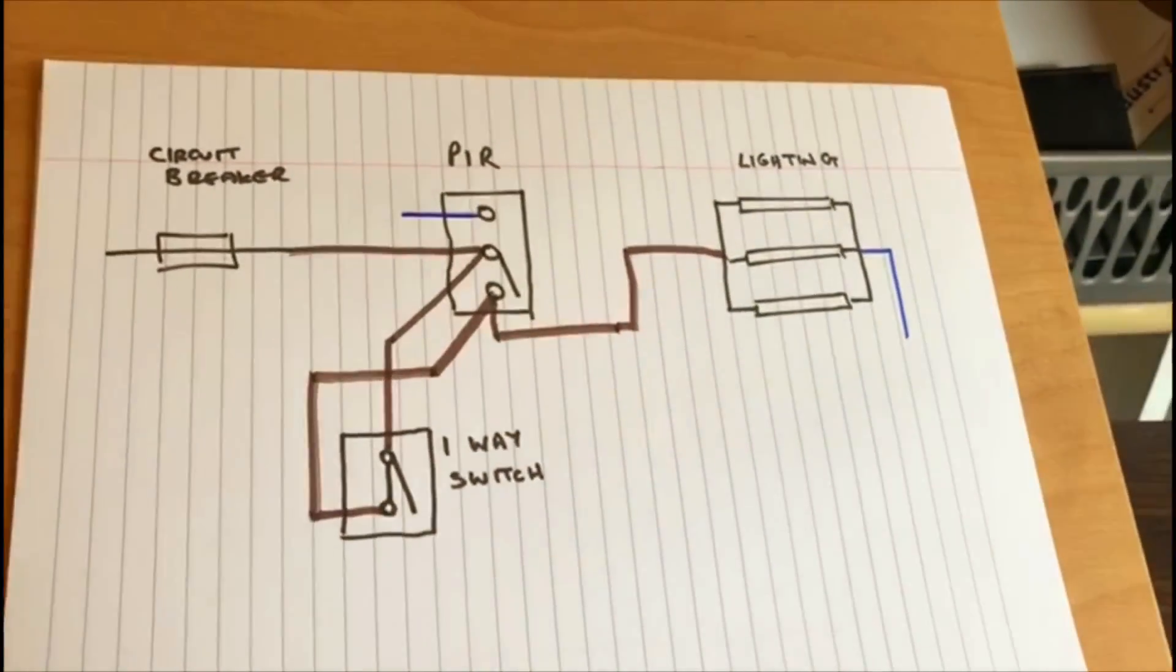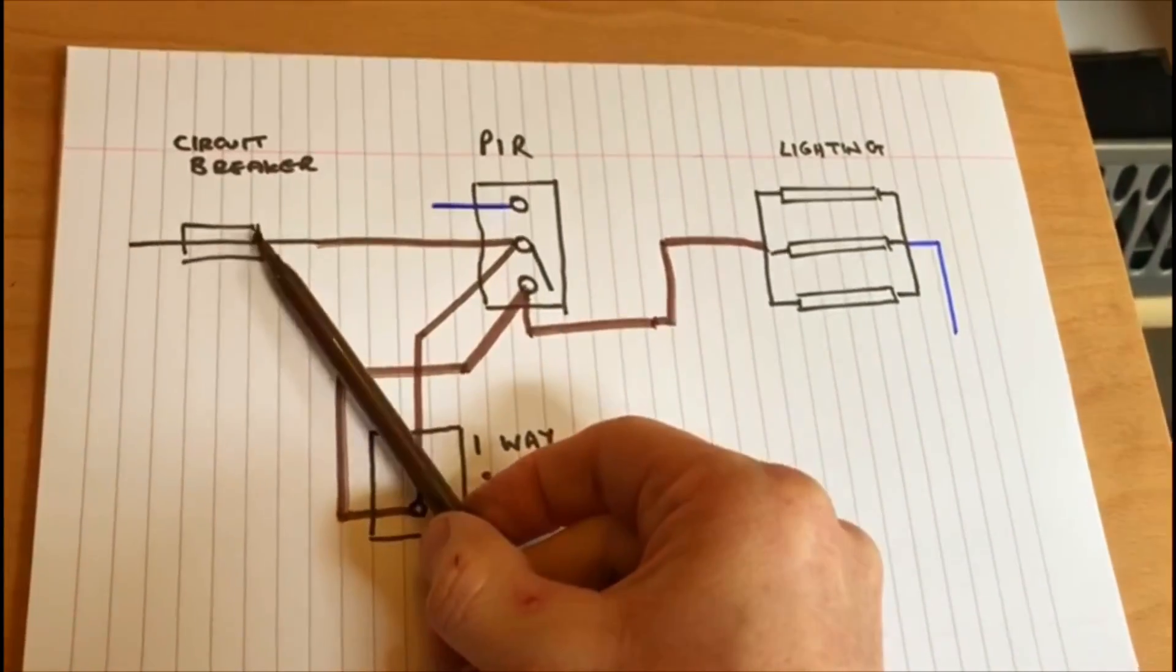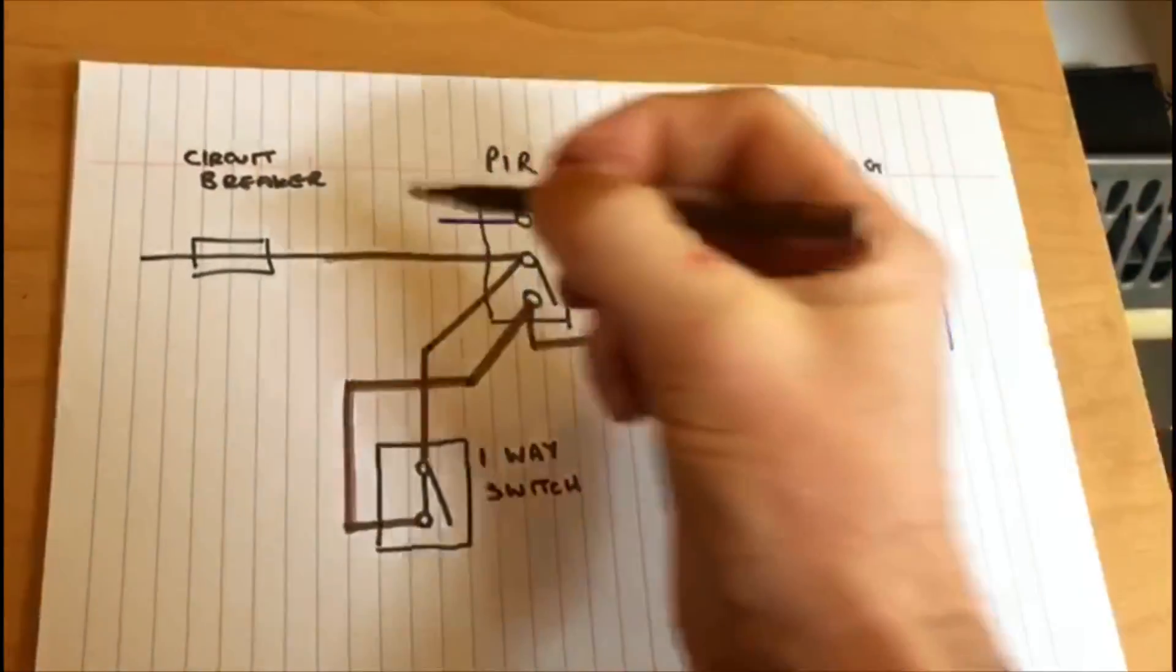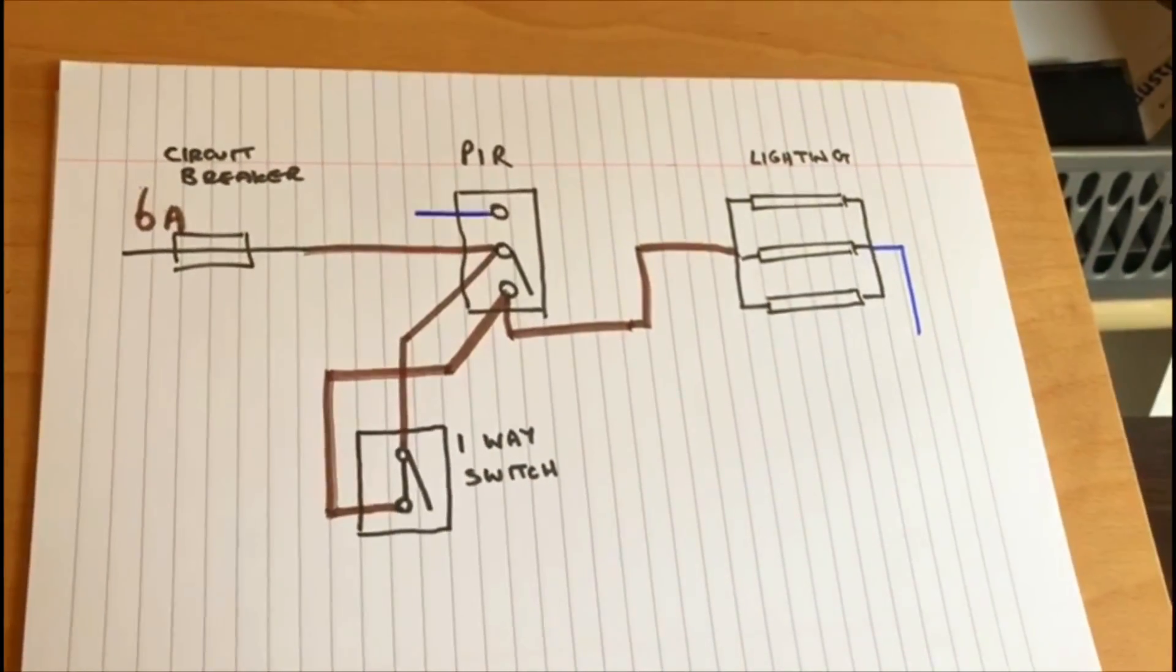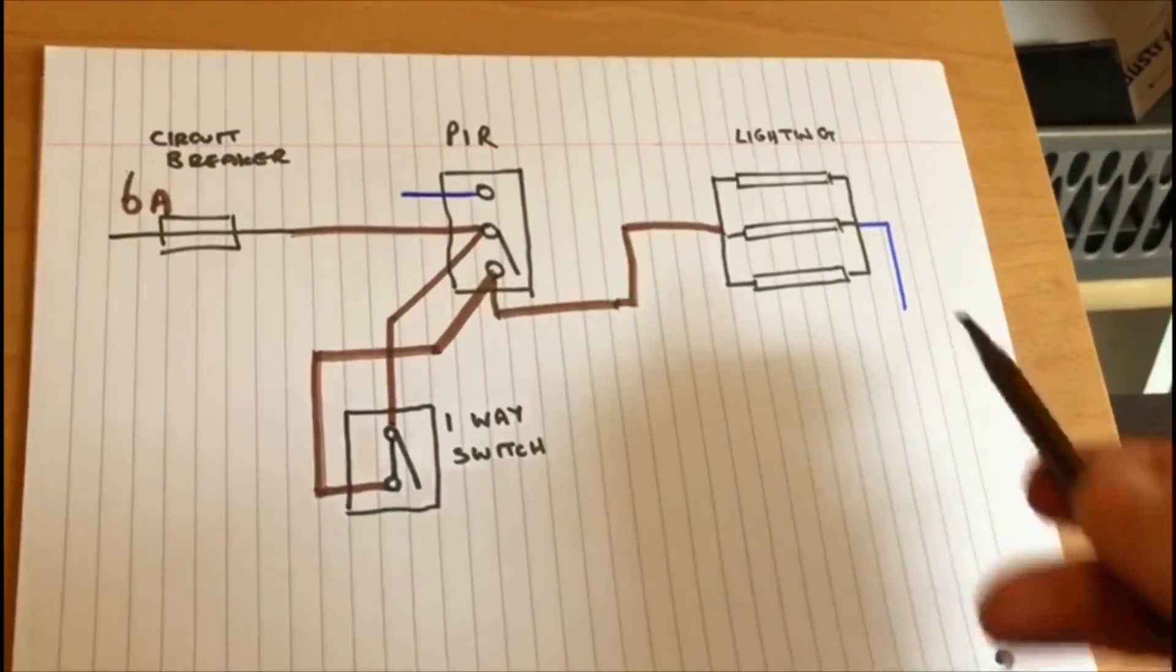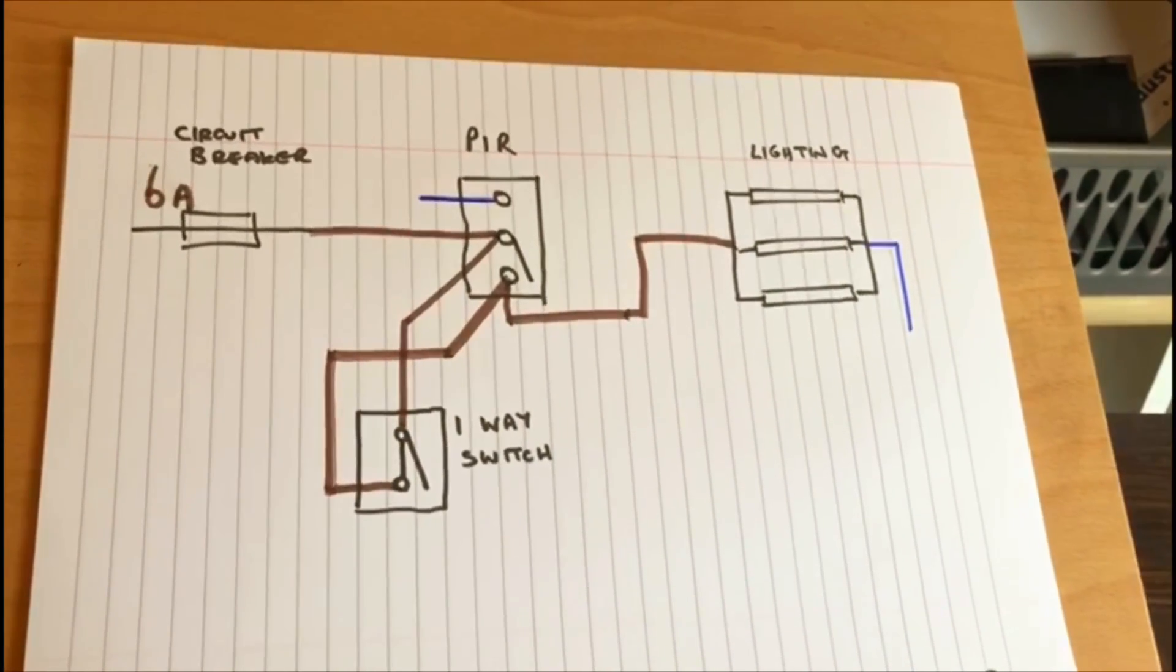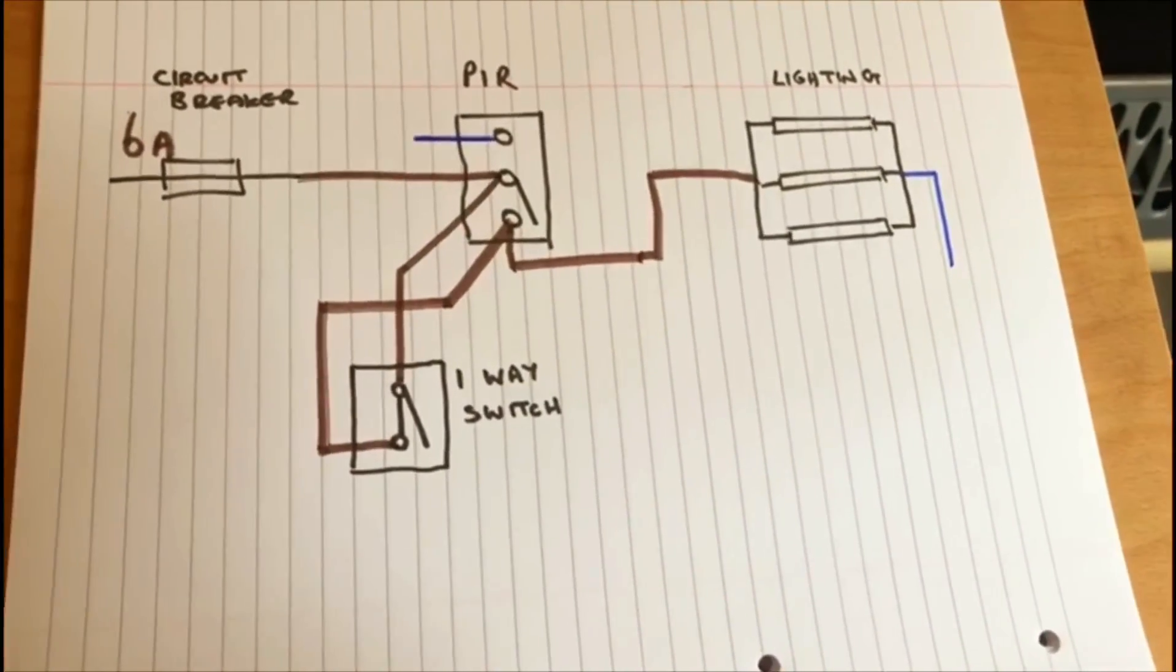One thing that I should have mentioned previously as well is that the size of the circuit breaker obviously needs to reflect the amount of lights that are going to be there. So normally this would probably be a six amp circuit breaker for the lights, but then you'd have to consider how many lights you are going to have. So you might just have two or three fluorescent lights or LEDs or whatever they are. Usually this circuit here would be okay. So hopefully that video will be useful for someone.